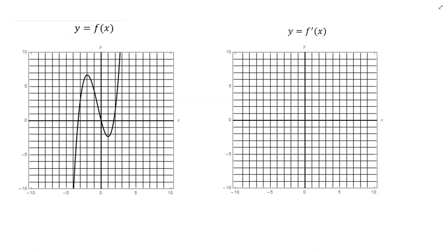Let's look at this first function and try to graph its derivative. If I explore this from left to right, we see the function is increasing, which means the slope of its tangent line is positive. Then it's decreasing, which means the slope is negative. And then it's increasing, which means the slope is positive again. Remember, f' should be a graph of the slope of the tangent line.